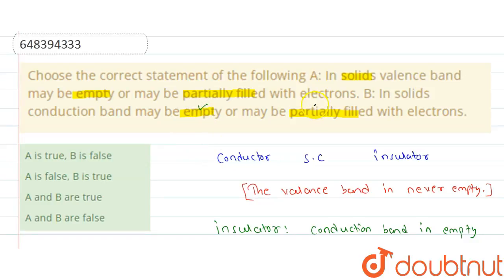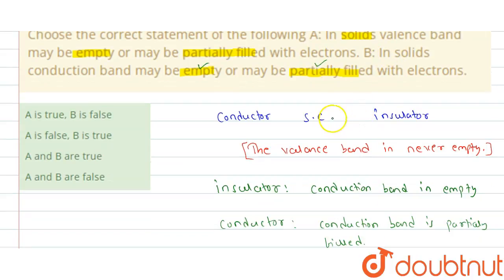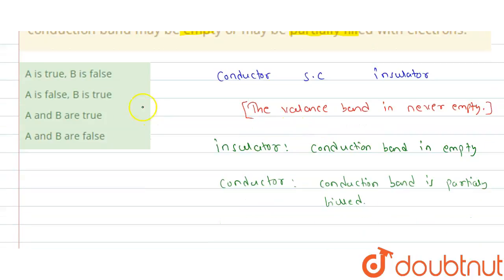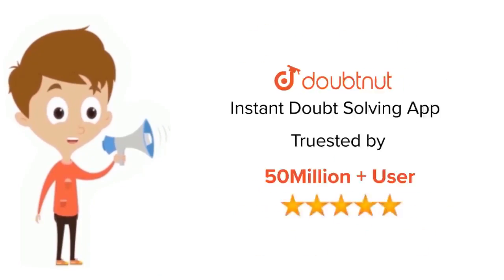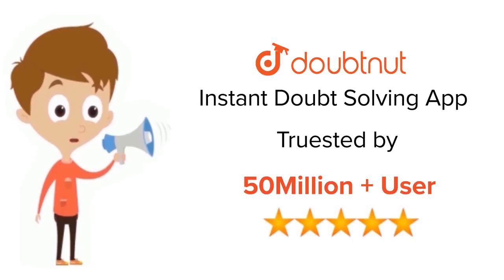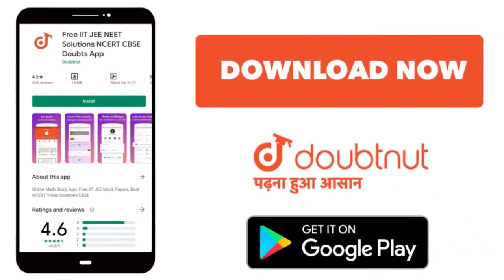So we can say the conduction band may be empty or may be partially filled, making Statement B true. Therefore, Statement A is false and Statement B is true — option 2 is the correct answer. Thank you. For class 6 to 12th, IIT JEE and NEET level, trusted by more than 5 crore students, download the DoubtNut app today.